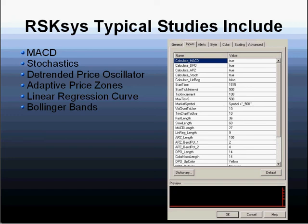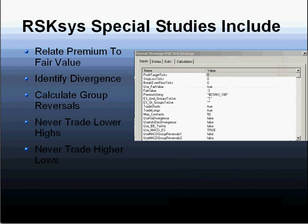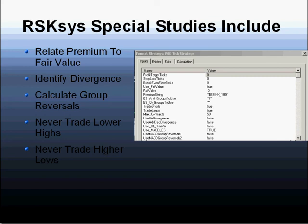By combining these features, we're also able to generate specialized studies whereby we track our trades in relationship to the premium and fair value. We can identify divergence on any data feed that you wish, and we're able to calculate our group reversal system. We can also set up the strategy so that it never trades on a lower high as the market has already turned, and we'll never trade on a higher low if the market is beginning to rally — or we can set it up to allow that particular situation.